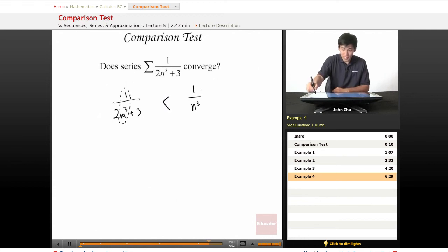Let's take a look at the term 1 over n cubed. We know that this is a p series with p value equal to 3, which is greater than 1, so the series should converge.